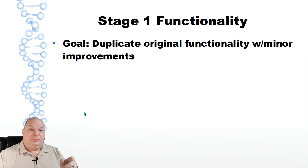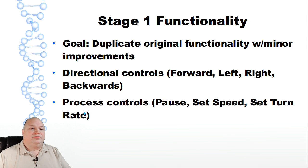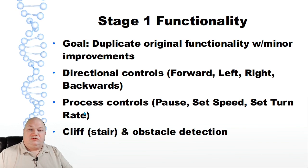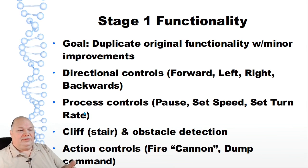The stage 1 functionality is to duplicate the original functionality with some minor improvements beyond the fact that we're using all modern computing. We'd have our directional controls forward, left, right, backwards, your process controls of pause, an enhancement for setting the speed and setting the turn rates, and then also some cliff or stair detection and obstacle detection during turns so that we don't smack into things. And then of course we have our action commands, things like fire the cannon and the dump command which is kind of up in the air because I don't have a trailer yet.